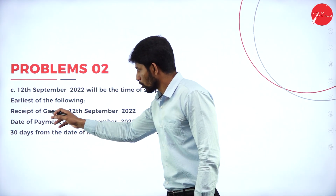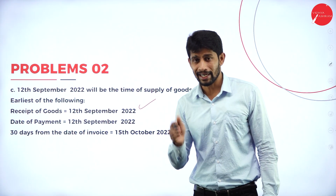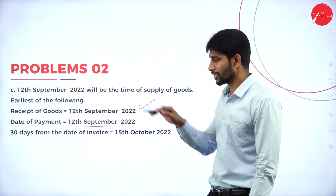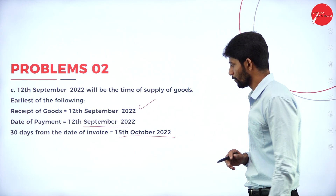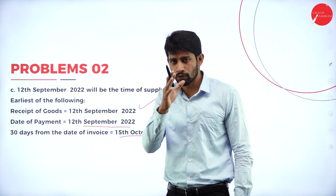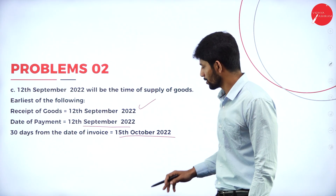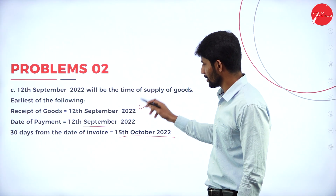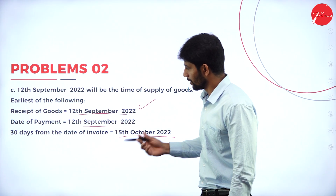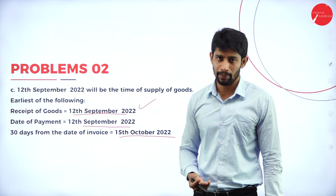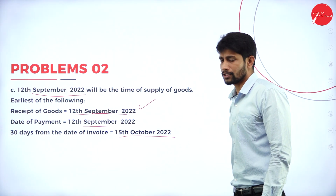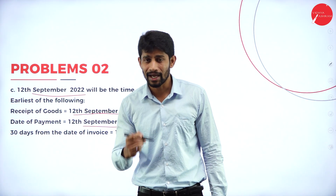Case C: Receipt of goods is 12th September and payment is also made on the same date, 12th September 2022. 30 days from the date of invoice — invoice issued on 15th September 2022 — gives 15th October 2022. In these three dates, which is the earliest? That is 12th September 2022. Either receipt of goods or date of payment, both are the same. So 12th September 2022 will be the time of supply of goods under reverse charge mechanism.